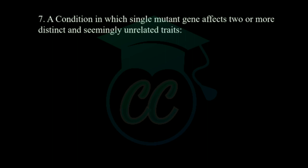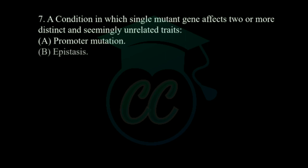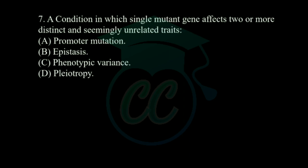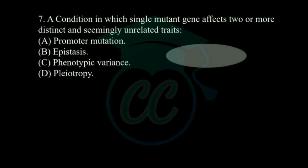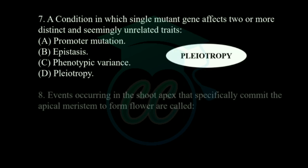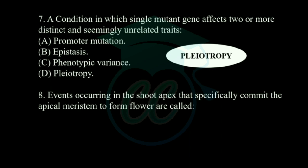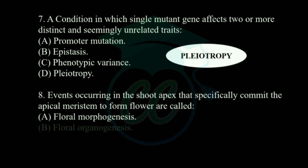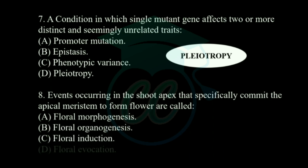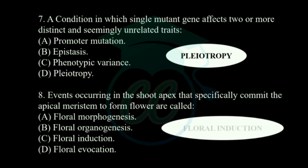Next question: a condition in which a single mutant gene affects two or more distinct and seemingly unrelated traits. Options: promoter mutation, epistasis, phenotypic variants, and pleiotropy. The answer is pleiotropy. Next question: events occurring in shoot that specifically commit the apical meristem to form a flower are called? Options: floral morphogenesis, floral organogenesis, floral induction, and floral evocation. The answer is floral induction.